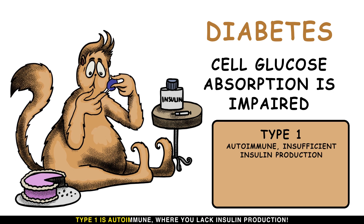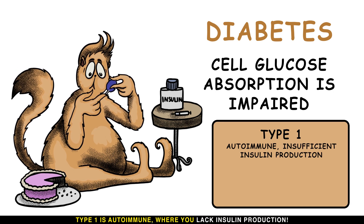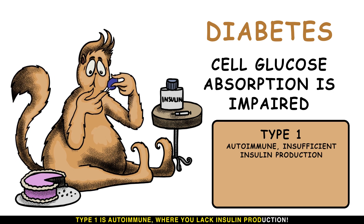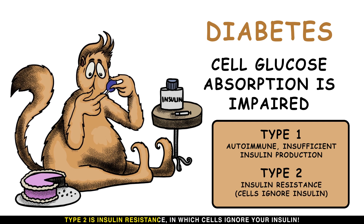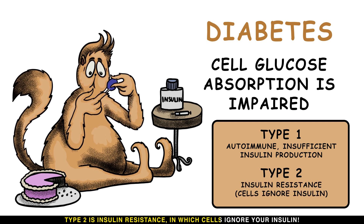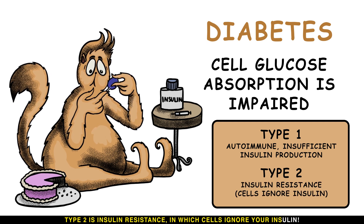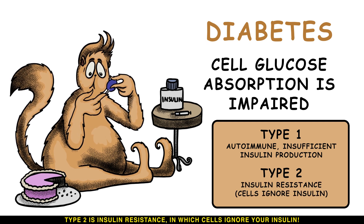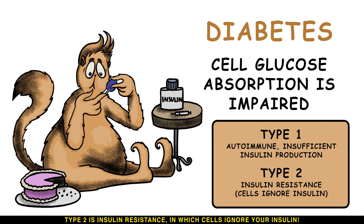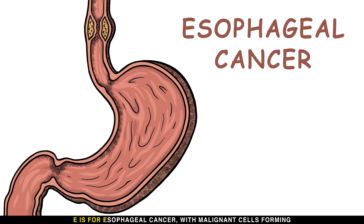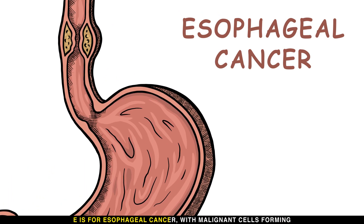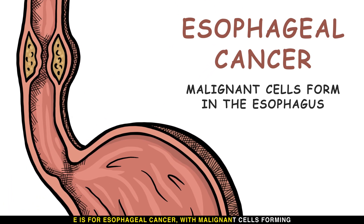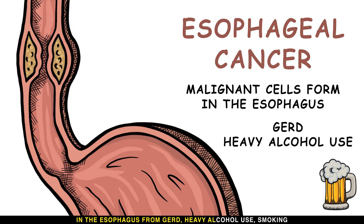Type 1 diabetes is autoimmune, where you lack insulin production. Type 2 is insulin resistance, in which cells ignore your insulin. E is for esophageal cancer, with malignant cells forming in the esophagus from GERD, heavy alcohol use, and smoking.